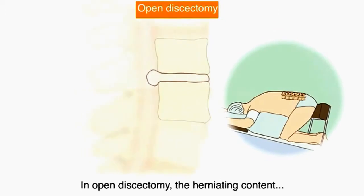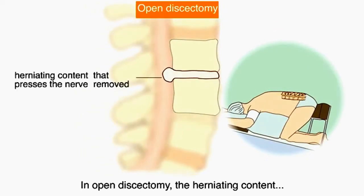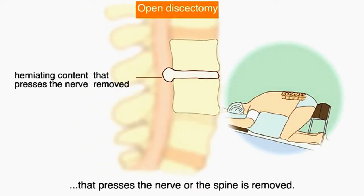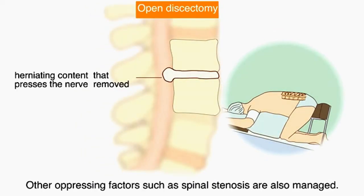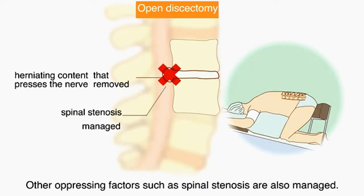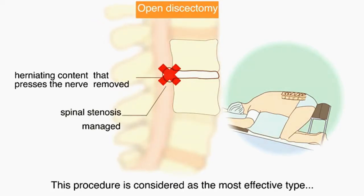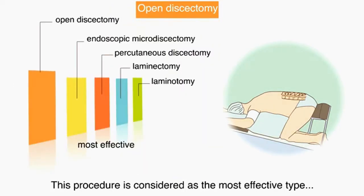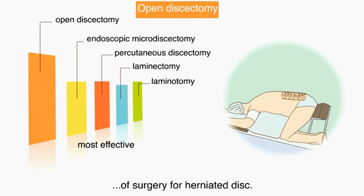In open discectomy, the herniating content that oppresses the nerve or the spine is removed. Other oppressing factors such as spinal stenosis are also managed. This procedure is considered the most effective type of surgery for a herniated disc.